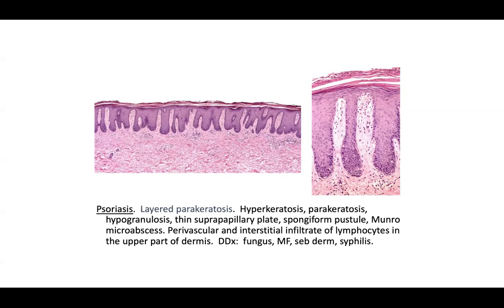You'll want to see classically that layered parakeratosis, hypogranulosis, thinning of the suprapapillary plates, spongiform pustules, Munro micro-abscesses, and perivascular and interstitial lymphocytes in the upper dermis. When you see this pattern you should have a differential including fungal infections — if you have a lot of neutrophils in the stratum corneum, make sure a fungal stain is done and is negative.